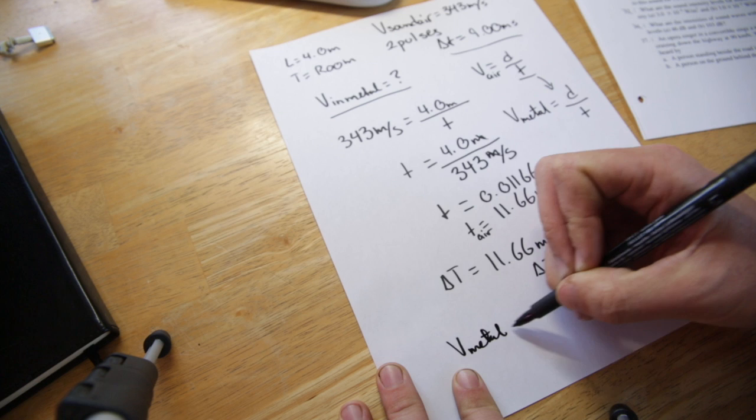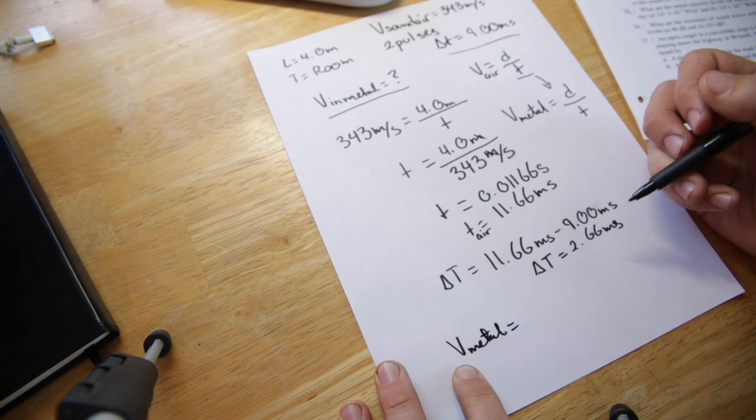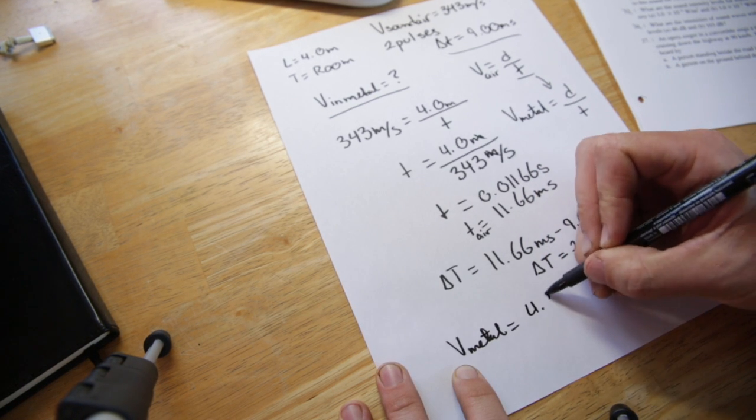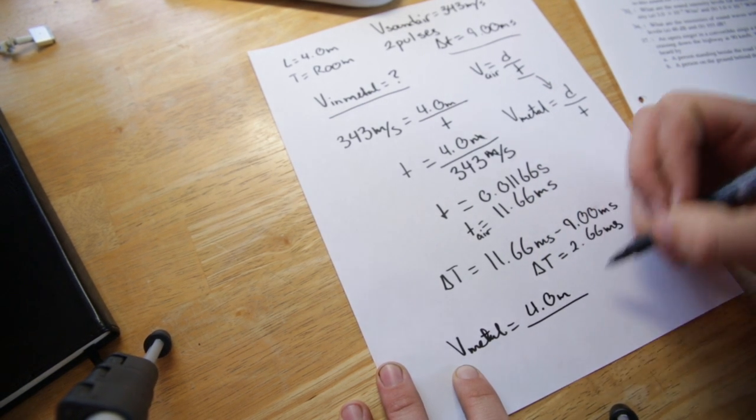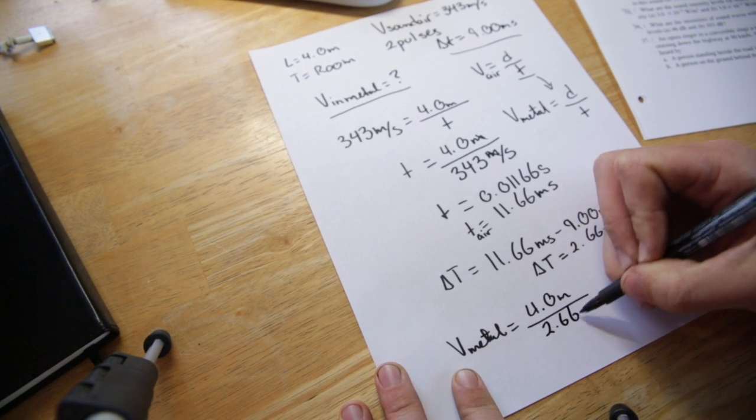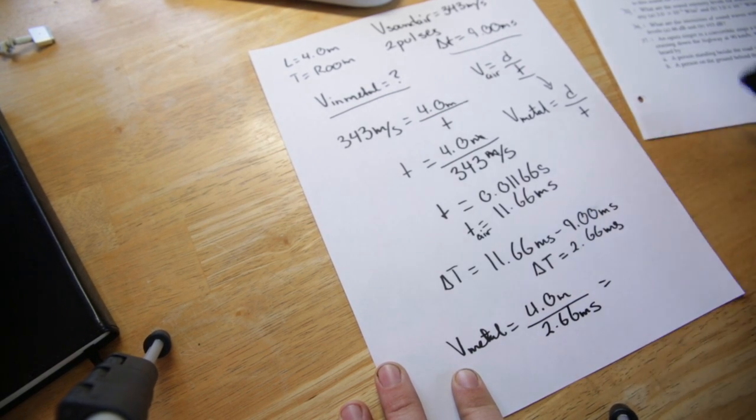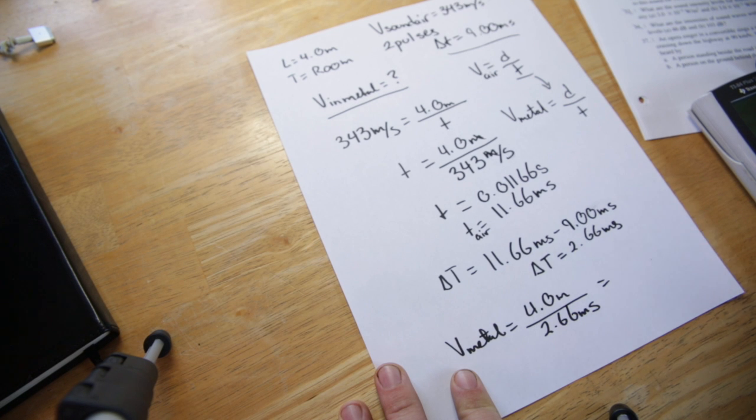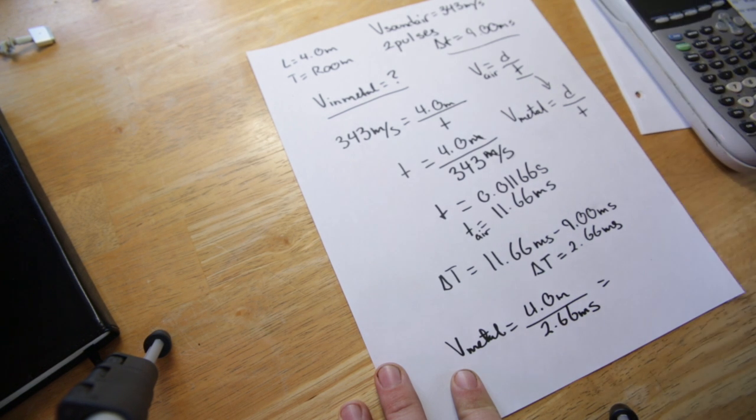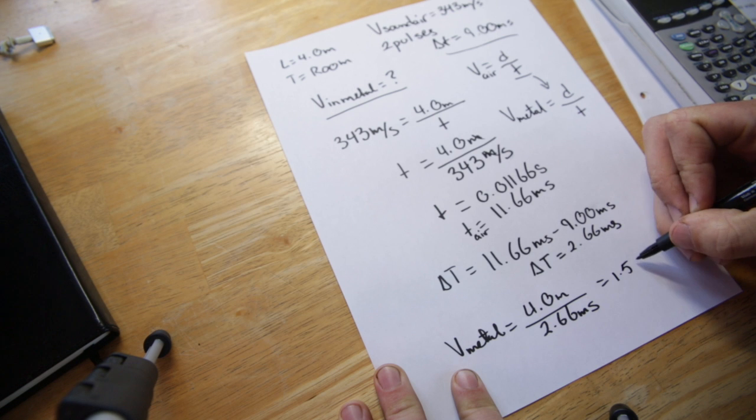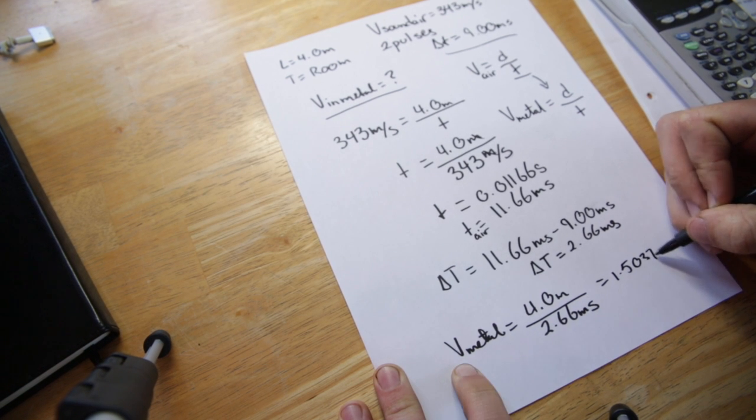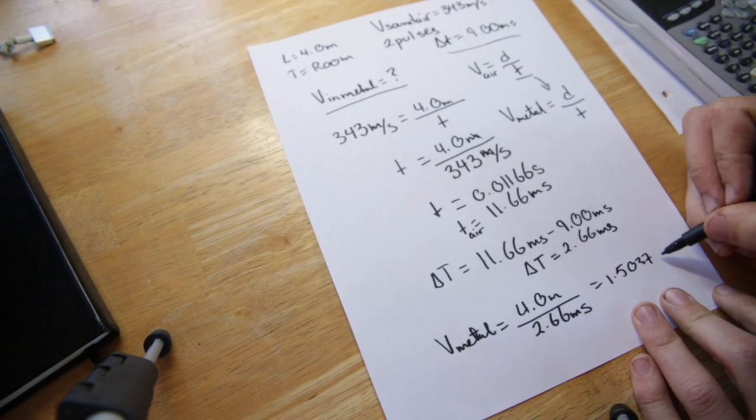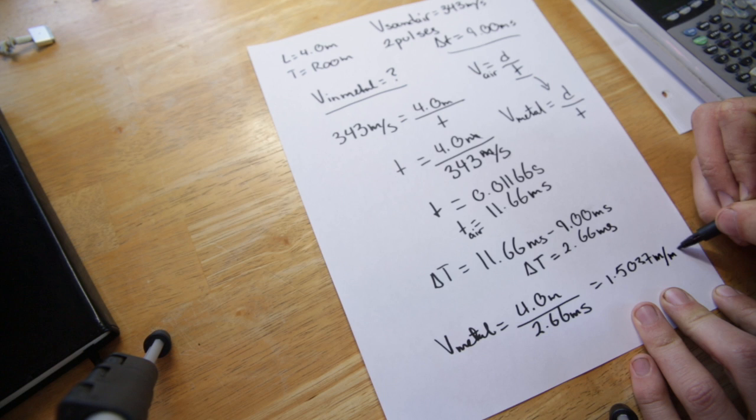So velocity of metal, our unknown that we are solving for, is equal to distance 4.0 meters over 2.66 milliseconds, which will be equal to 1.5037 meters per millisecond.